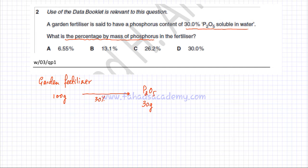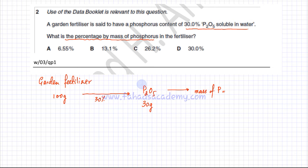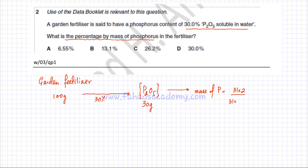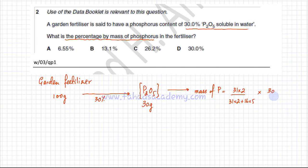Now I need to figure out the mass of phosphorus in this 30 grams. The mass of phosphorus equals the fraction of phosphorus in P₂O₅. In one molecule there are two phosphorus atoms, each with atomic mass 31, so that's 31 × 2. Divided by the total mass of P₂O₅, which is 31 × 2 plus 16 × 5 (five oxygens), multiplied by 30 grams.